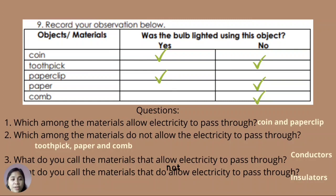These are the correct answers: coin — yes, the bulb lighted; toothpick — no; paper clip — yes; paper — no; and comb — no. Number one answer: coin and paper clip. Number two: toothpick, paper, and comb. Number three: conductors. Number four: insulators.